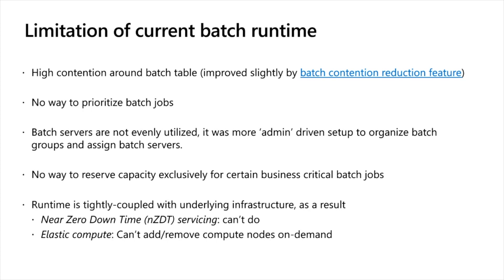Another limitation is near zero downtime. For Windows OS patching, done every third week of each month, we currently ask customers and partners to provide a dedicated downtime window. This could be done in a near zero downtime fashion — a very brief interruption — but it cannot be done today because batch groups are tied to batch servers. If one batch server is taken offline, any batch group assigned to it will either error or wait until the server is back.